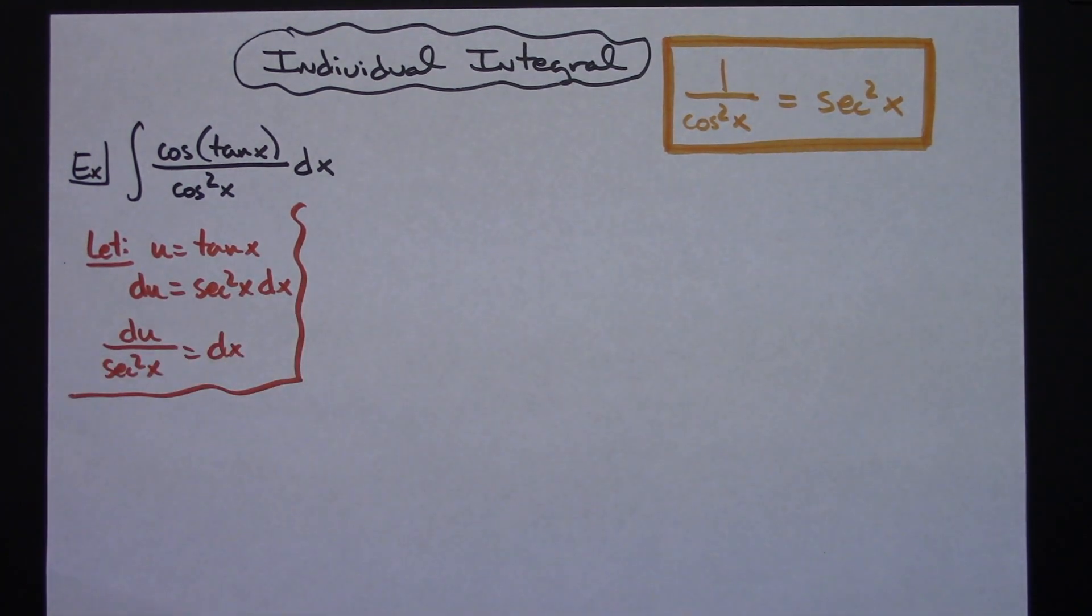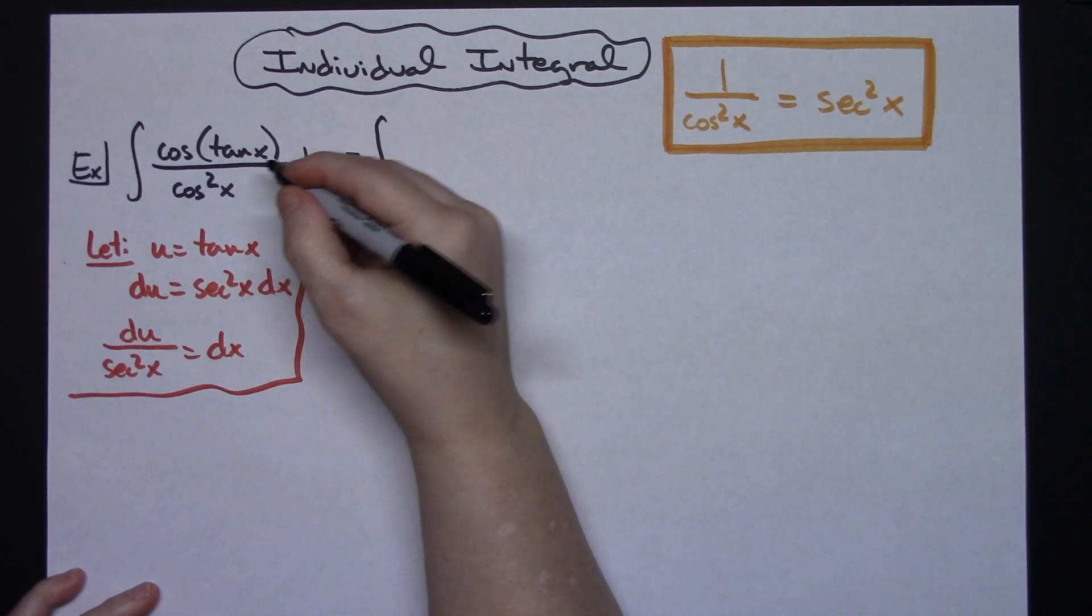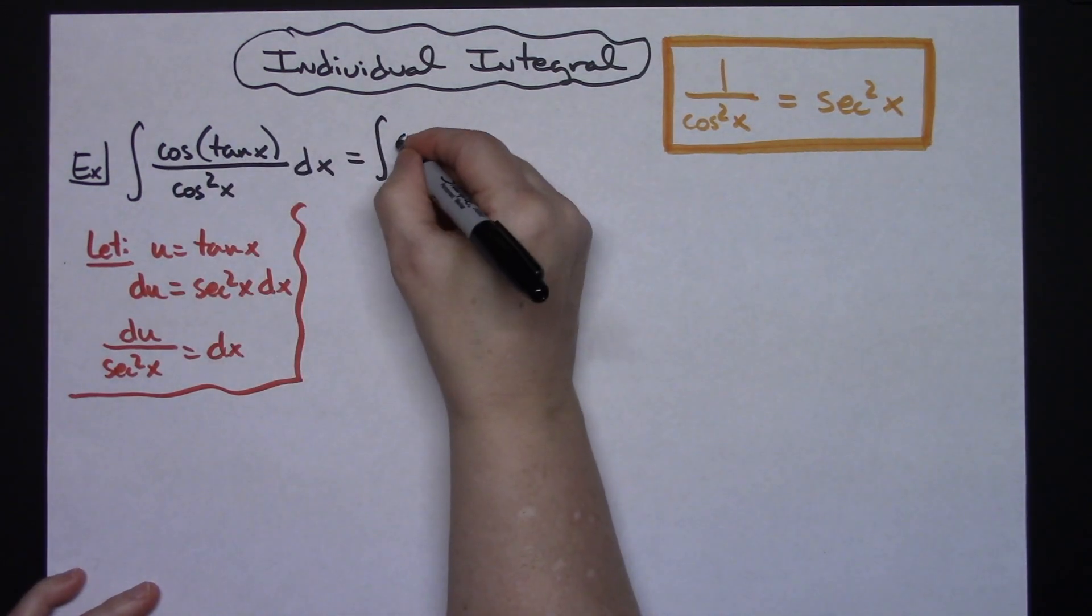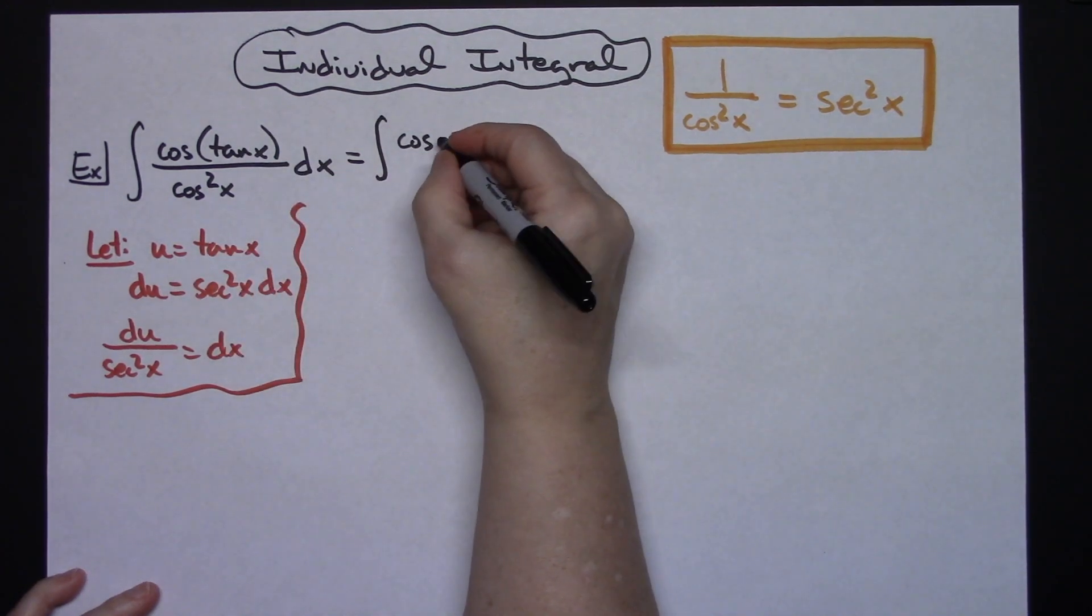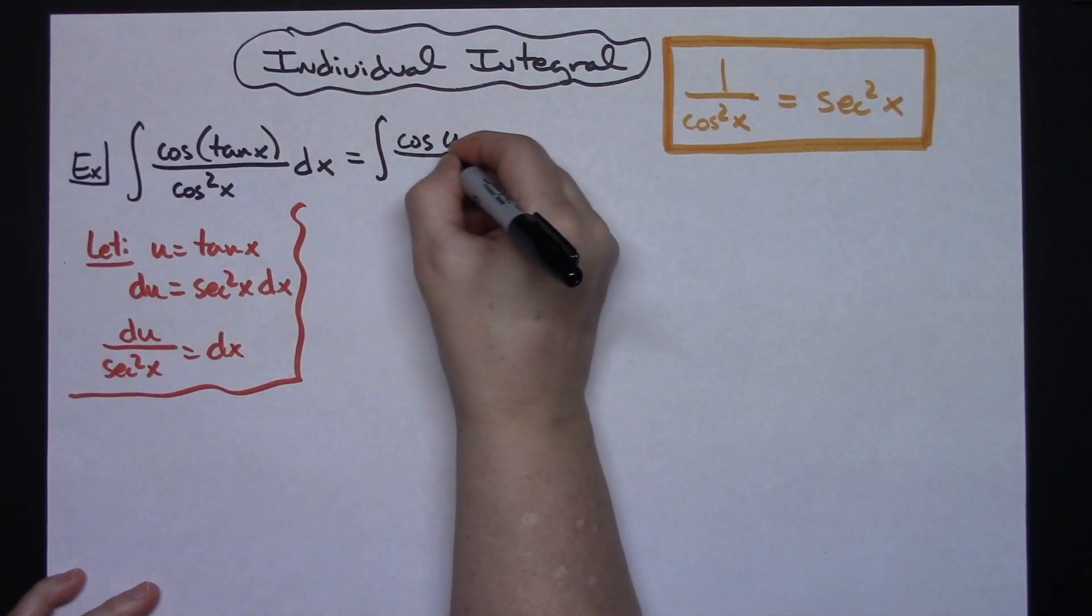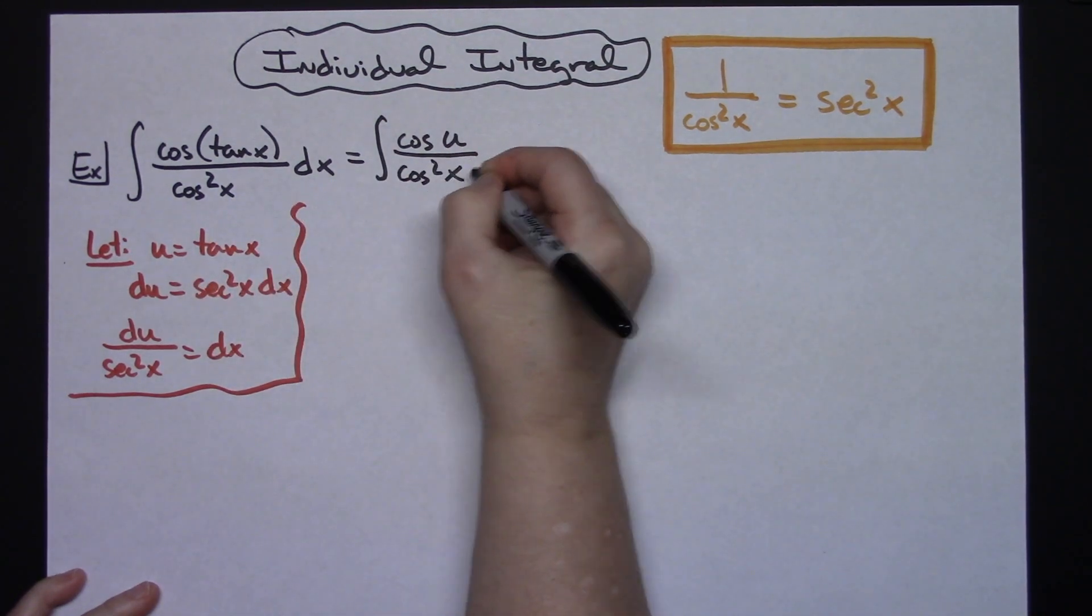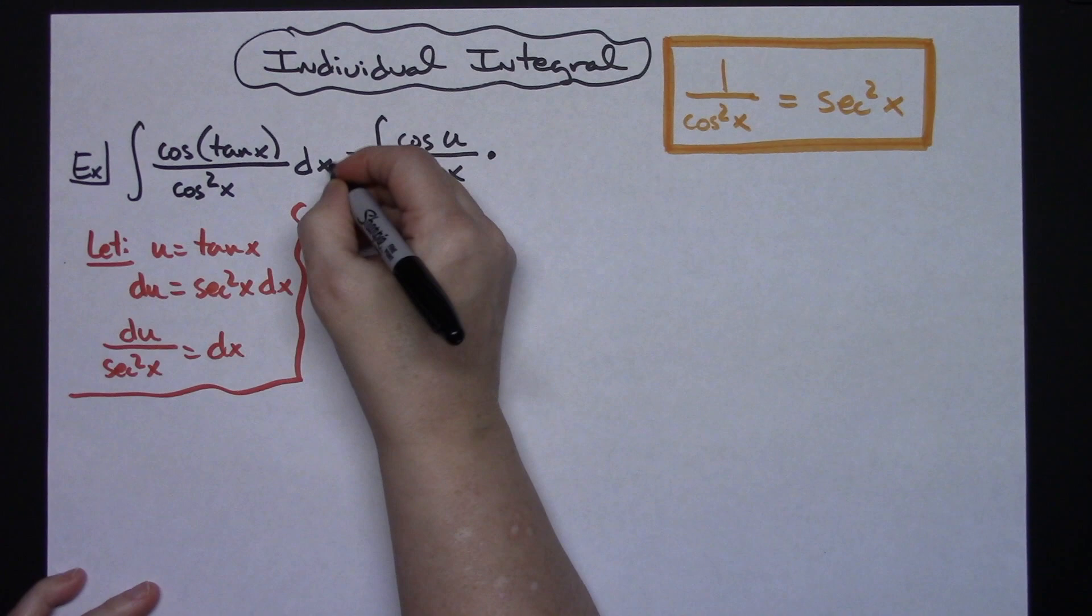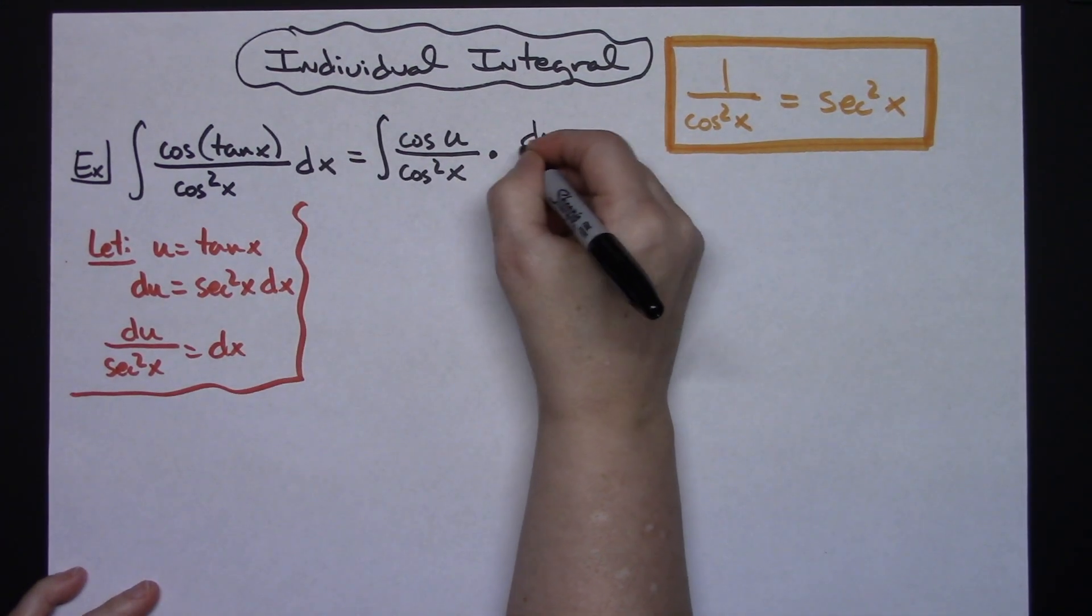After you get that part done, you're going to come back to your original integral and start making substitutions. I'm going to replace that tangent x with u, so cosine u over cosine squared x. I'm going to substitute dx for what we said it equals, so du over secant squared x.